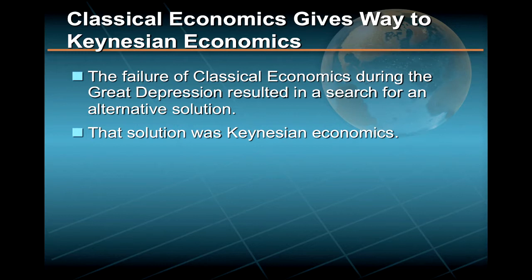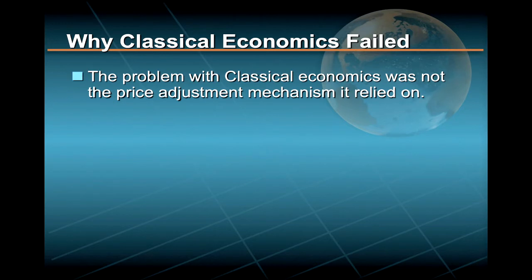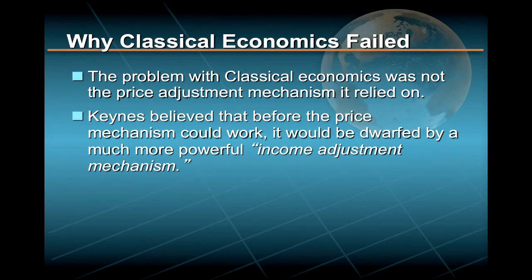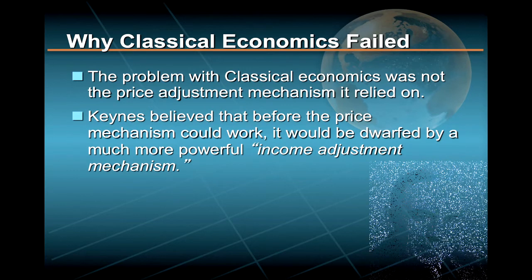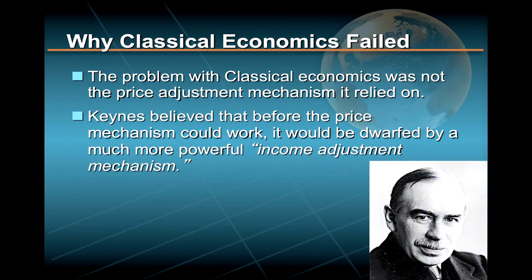That solution turned out to be Keynesian economics. To John Maynard Keynes, the problem with classical economics was not the price adjustment mechanism that it relied on per se. Rather, Keynes believed that before such a mechanism had time to work, it would be dwarfed by a much more powerful and deadly income adjustment mechanism.